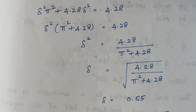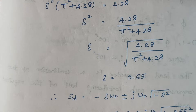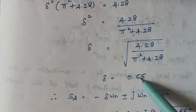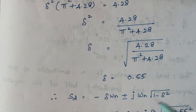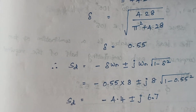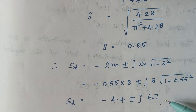Now substitute zeta = 0.55 into the dominant pole formula. We know omega_n = 8 and zeta = 0.55, so substituting gives the value of the dominant pole. We have to mark this on our graph sheet, so let us complete step 2 as well.